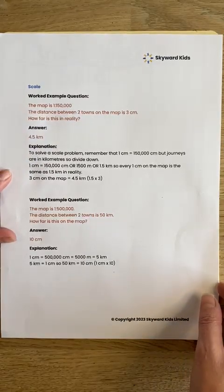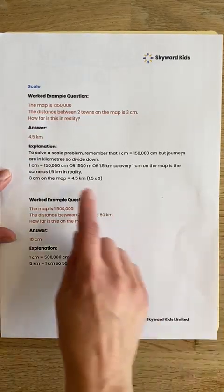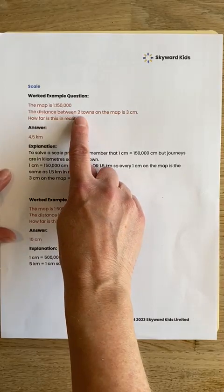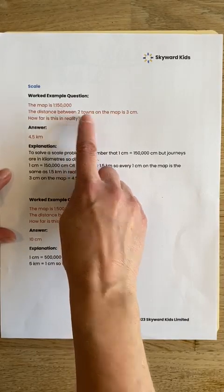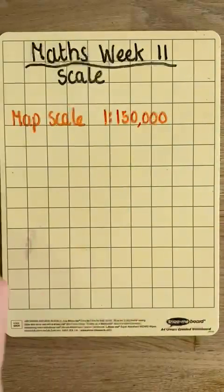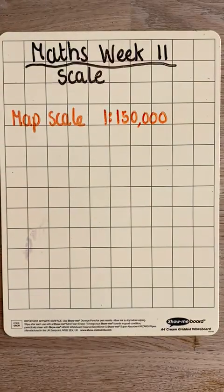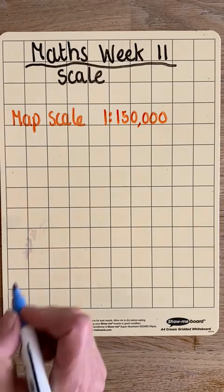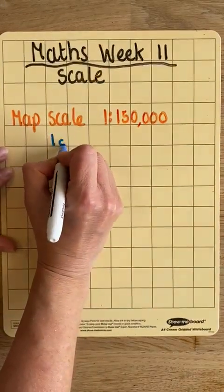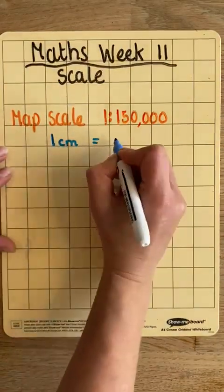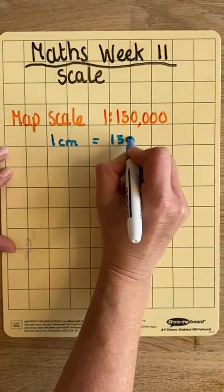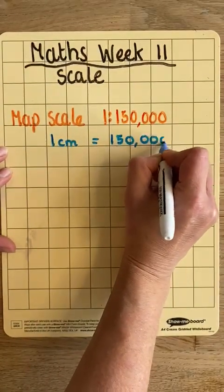So we're going to use this scale to work out how far in reality the distance between these two towns are. So let's have a look first of all at our map scale. We're told that the scale is 1 to 150,000. And that means that 1 centimetre is equal to 150,000 centimetres.